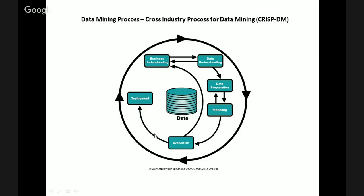We now move to the fifth stage of the CRISP-DM model, the evaluation stage. The purpose of this stage is to assess the data mining results from both quantitative and qualitative perspectives, with keen attention to detail to determine if the results are both justifiable and feasible. As mentioned before, not all patterns are valid, because patterns really can be found in any data.